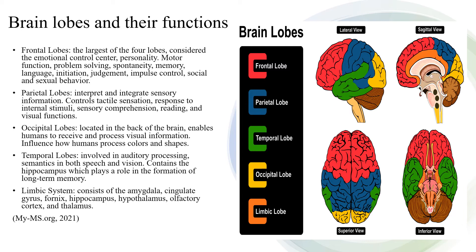The temporal lobe contains the hippocampus, which plays a role in the formation of long-term memory. The limbic system consists of the amygdala, cingulate gyrus, fornix, hippocampus, hypothalamus, olfactory cortex, and thalamus.